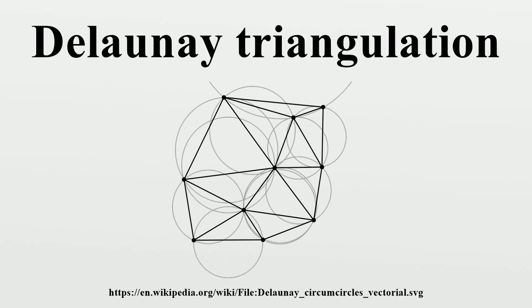The Delaunay triangulation is a geometric spanner. The shortest path between two vertices along Delaunay edges is known to be no longer than a constant times the Euclidean distance between them.